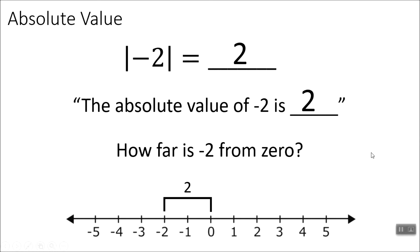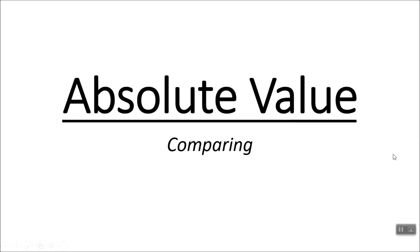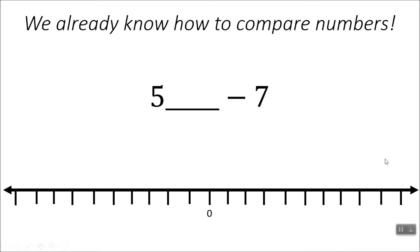So this part most kids don't have a problem with. The part when we deal with comparing absolute values is where it becomes more challenging — so that's what we're going to get into now. Comparing with absolute value. First, let's review how to compare regular numbers. We've got 5 compared to negative 7. I'm going to go down on my number line and mark where they are. The positive number is always going to be larger than the negative.